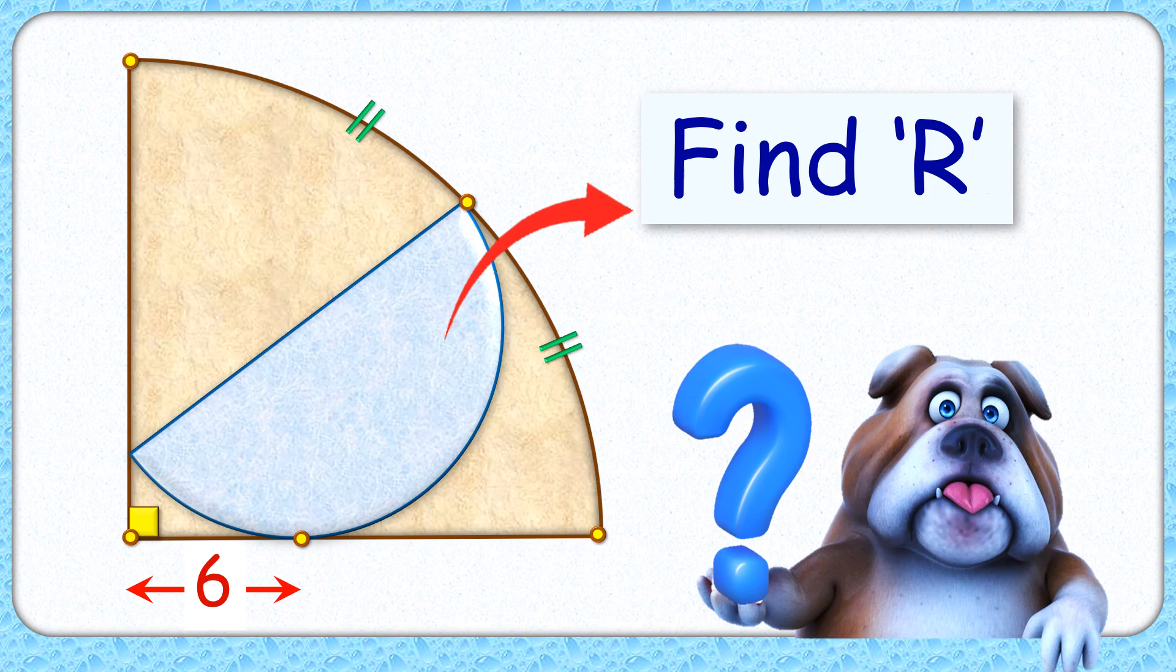In this interesting question we have a semicircle inside a quadrant such that this distance is 6 centimeters and one end of the semicircle is bisecting the arc of the quadrant. The exciting part is with this limited data we have to find the radius of this semicircle.